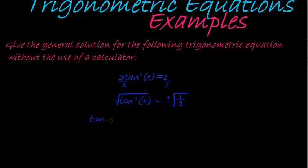In other words, we get that tan of x is either equal to 1 over the square root of 3, in other words, the square root of 1 over the square root of 3, or tan of x is equal to negative 1 over the square root of 3.